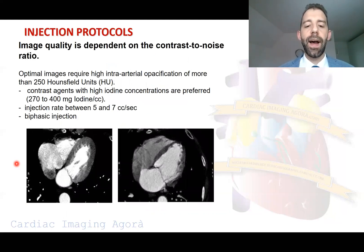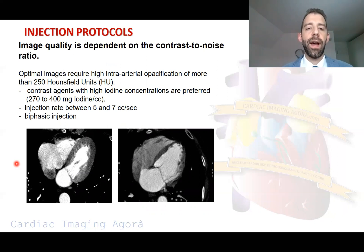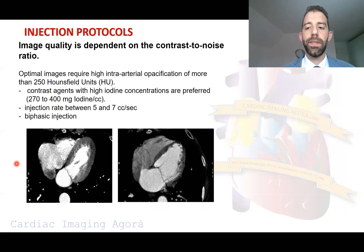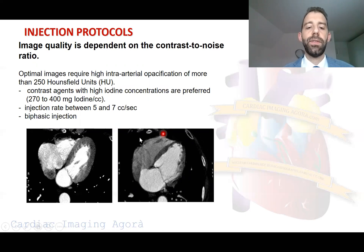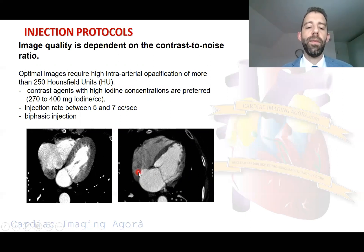It's also important to have high contrast resolution, and to use the right injection protocol to get images with high intrarterial opacification. Contrast agent with a high iodine concentration should be used, with an injection rate reaching 5 to 7 milliliters per second. It's important to have a biphasic injection with contrast agent followed by normal saline, in order to empty the right-side chambers and avoid beam hardening artifacts due to contrast agent on the right side of the heart.